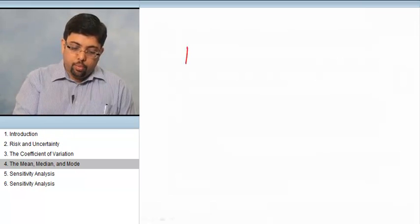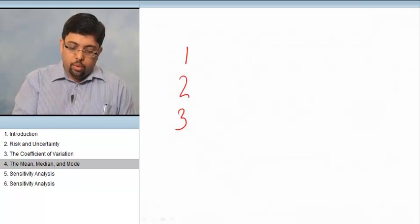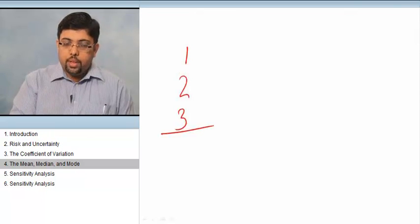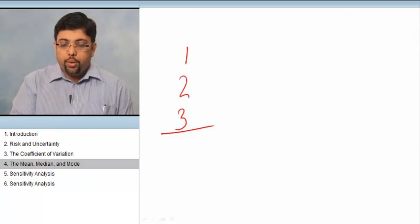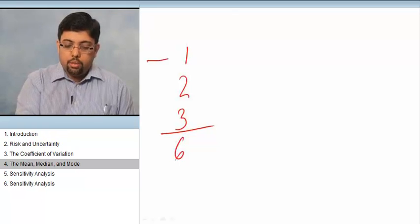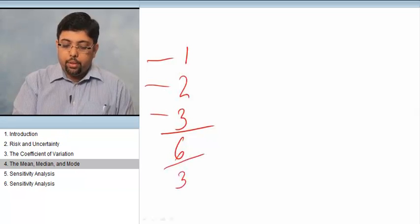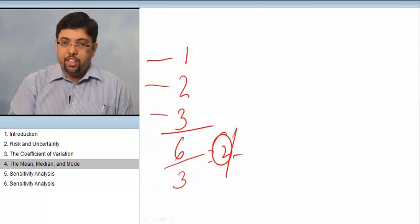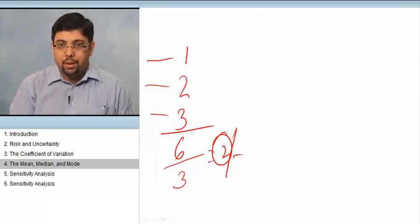For example, these are three numbers: 1, 2, and 3. The total of these three numbers is 6. Because this is the first number, the second number, and the third number, we divide it by 3, and 2 is the average. This is the mean.